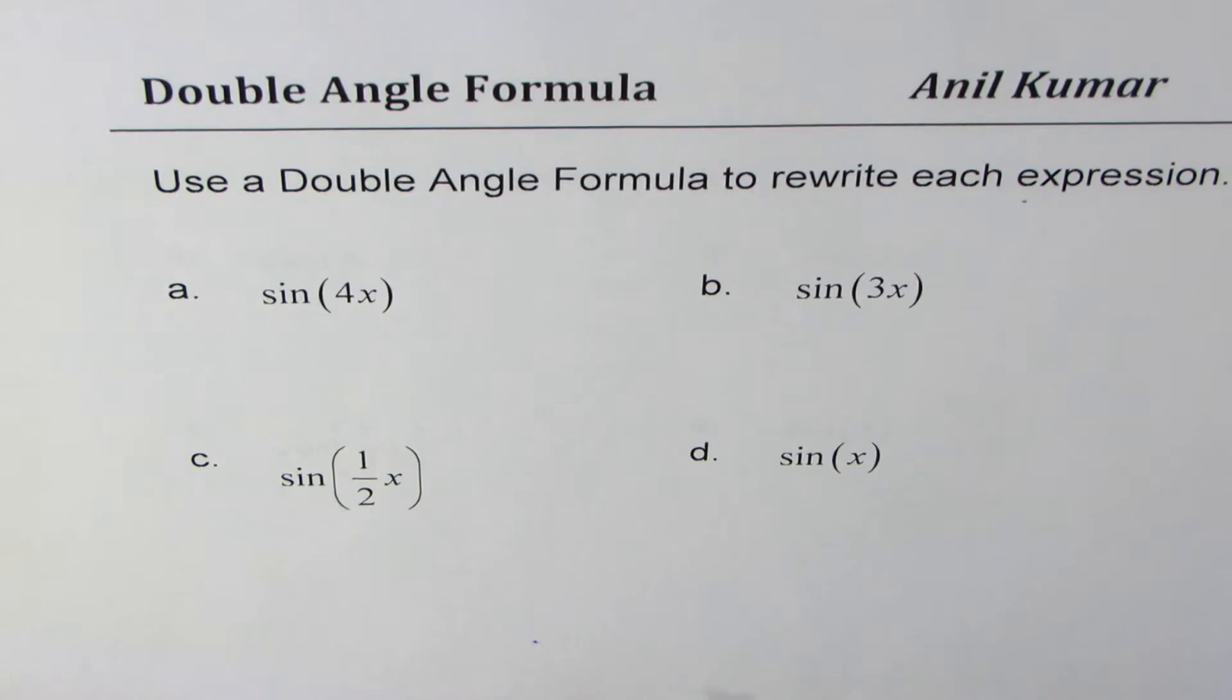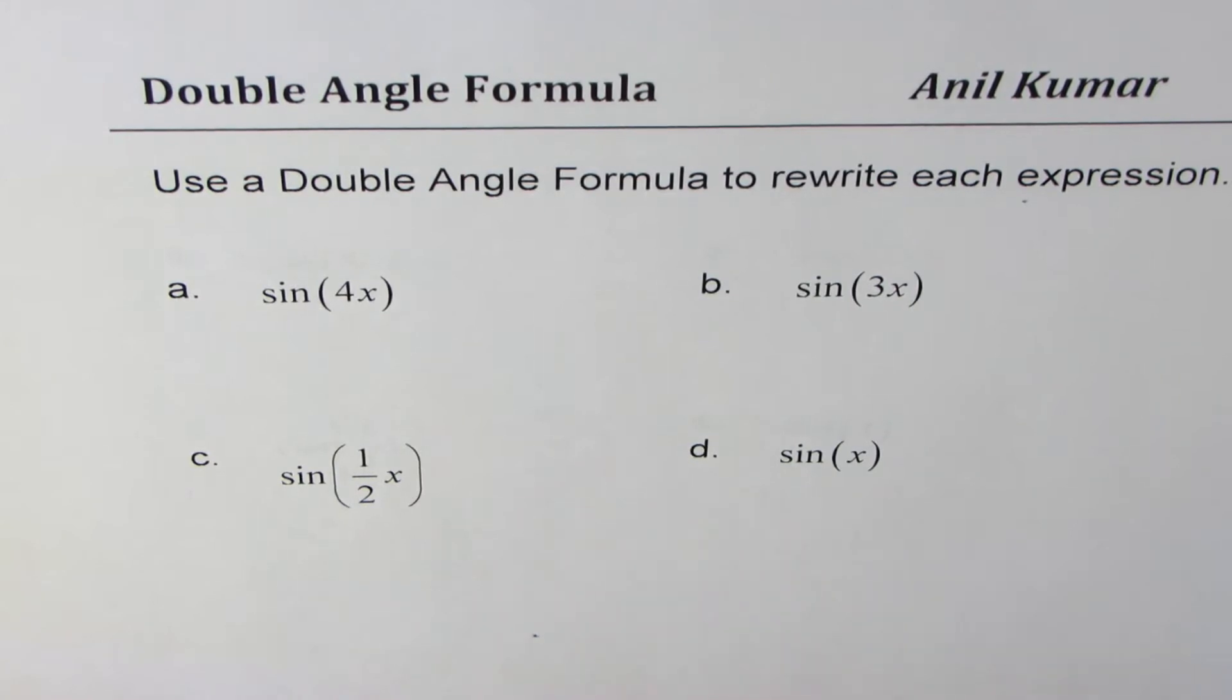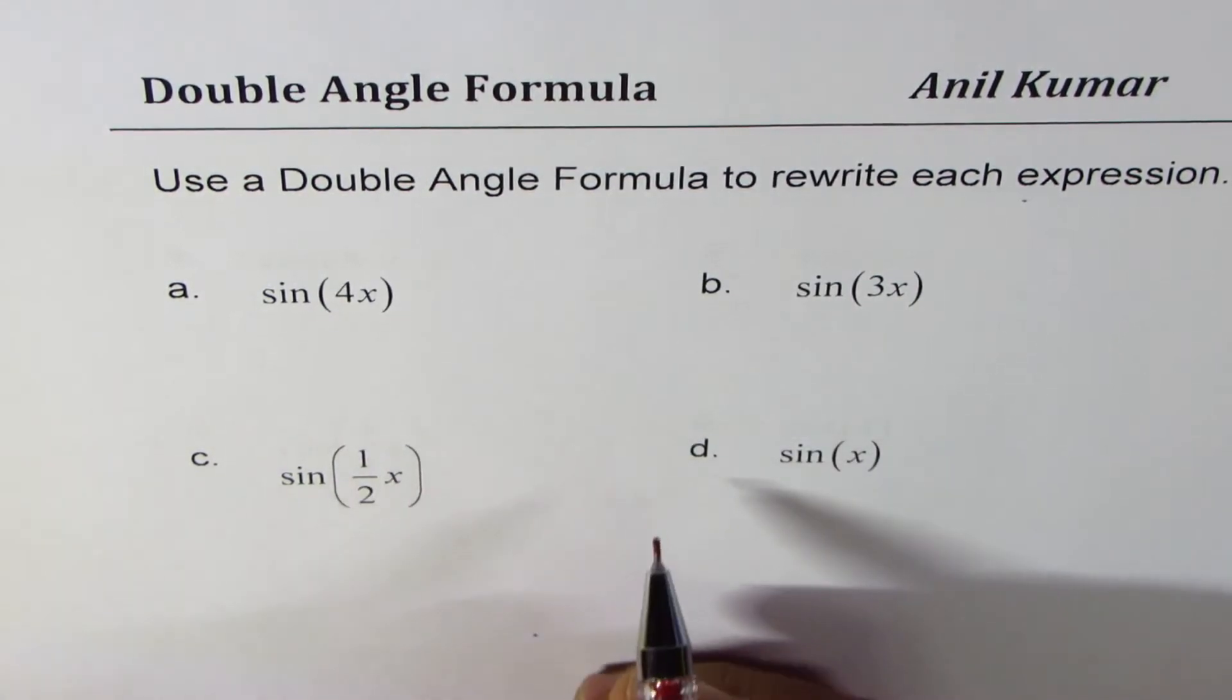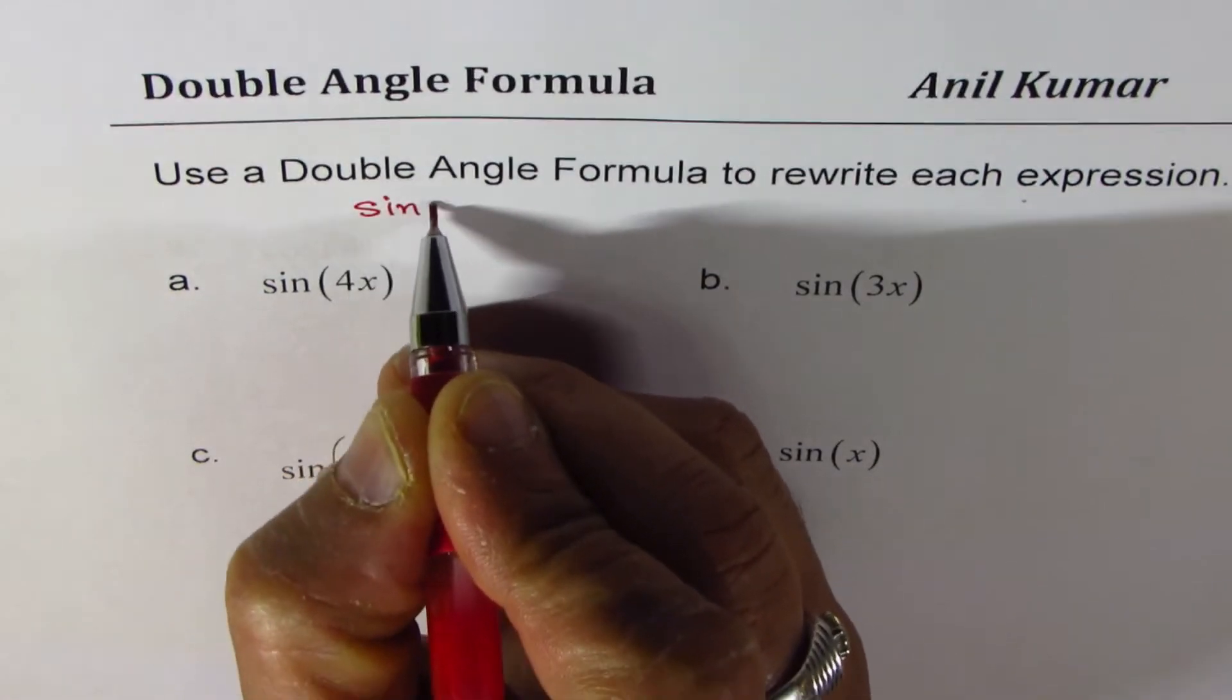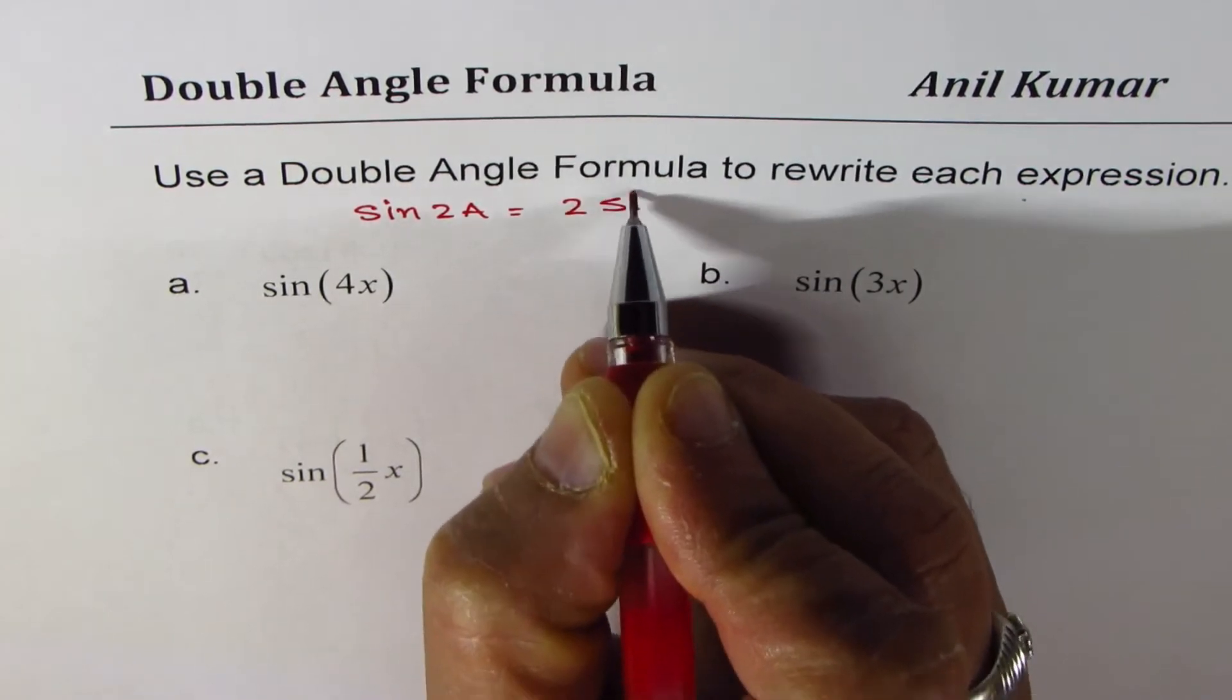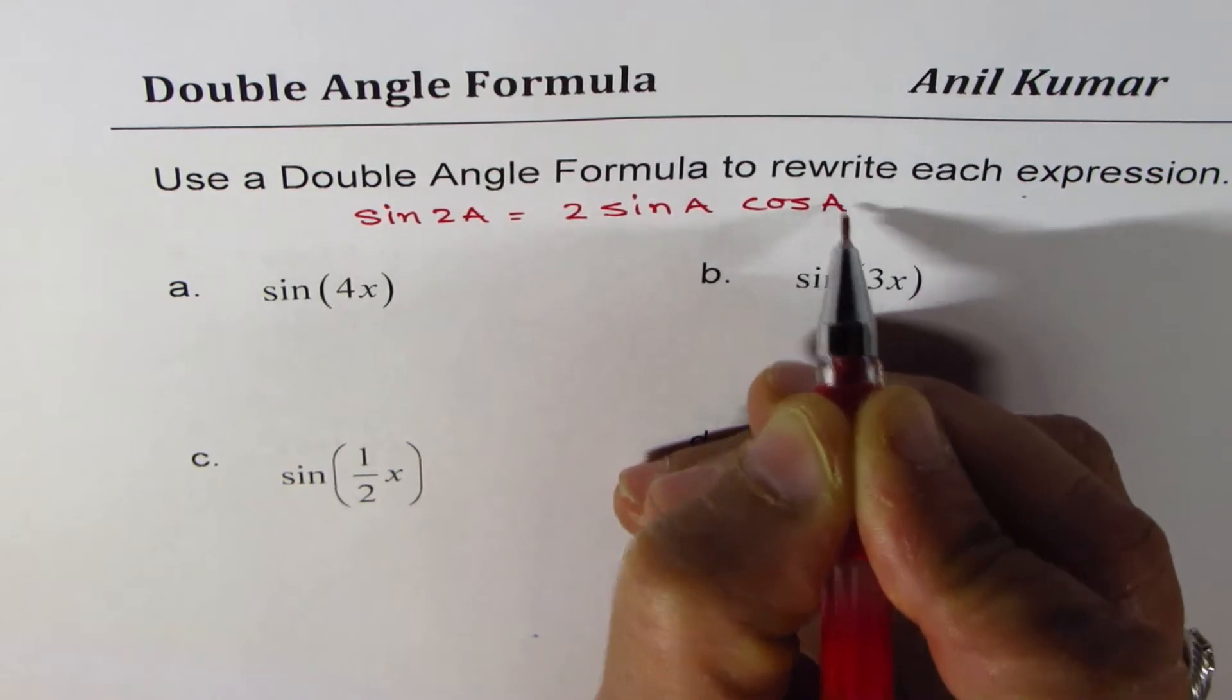We have four expressions here, and then we have four more expressions to go. All these expressions are in sine of x, so we'll write the double angle formula first and then continue. You know, sine of 2a equals 2 sine a cos a. So that is the formula to be applied.